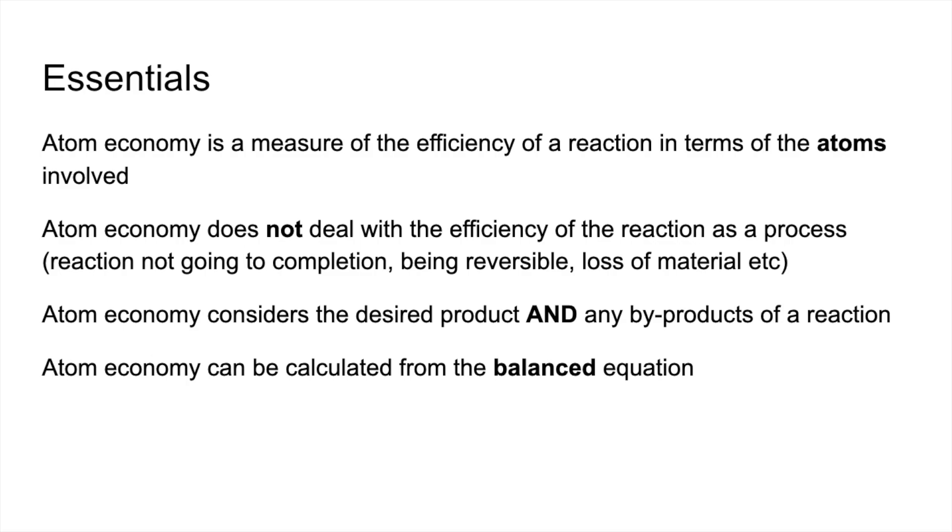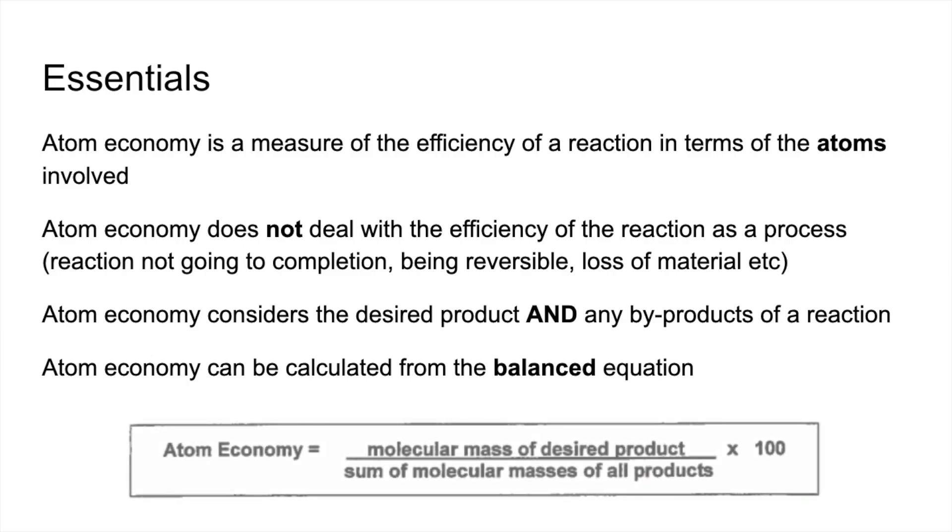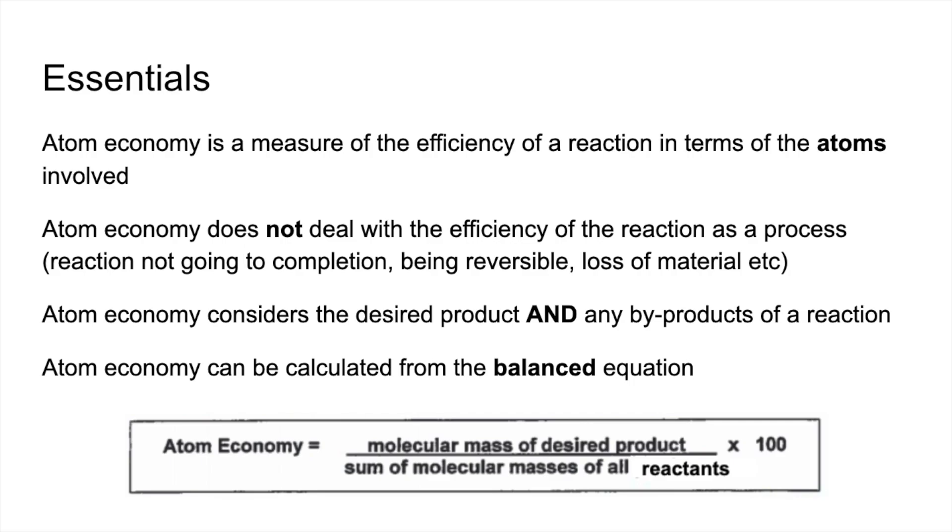So the formula we use for that looks like this. So atom economy is the molecular mass of your desired product over the sum of the molecular masses of all of the products times 100, or you could do it where you look at the sum of the molecular masses of all the reactants instead. Either way you still get the same answer.